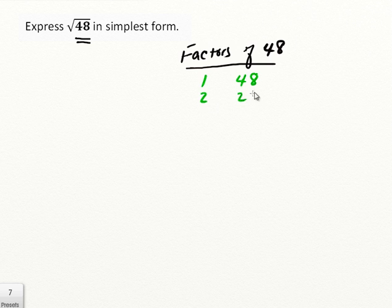So is 2 and 24. 3, well yes, 3 and 16. 4, well 4 goes in there 12 times. 5, no. 6, yes, and 6 and 8, and then we're done. So lots of factors there.